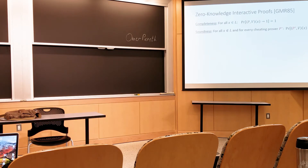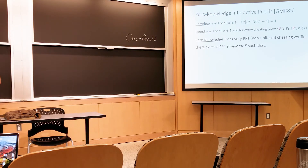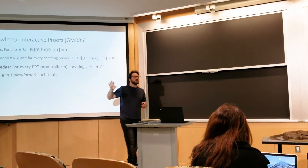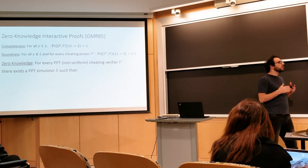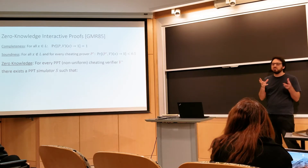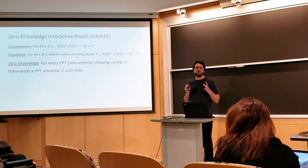The completeness and soundness properties remain the same, and now we add an additional property called zero-knowledge. For every probabilistic polynomial time, efficient verifier that can flip coins, which is non-uniform — meaning we think about the verifier as a sequence of polynomial-size circuits — and for every input size and statement, we can have a different circuit. The circuits can contain what we call advice, or any non-uniform information specific to that input length.